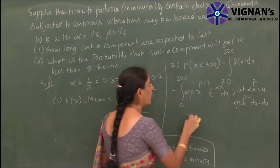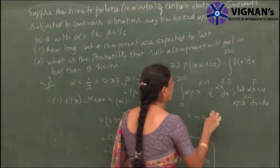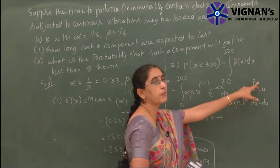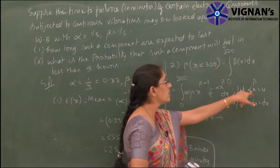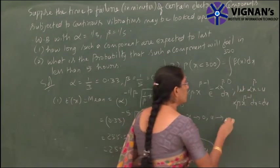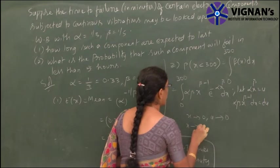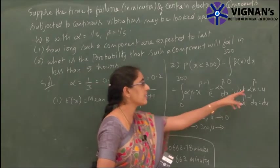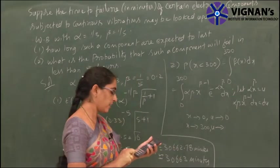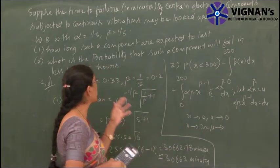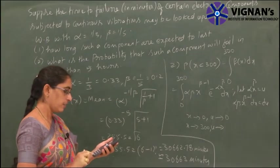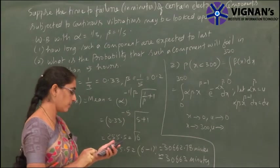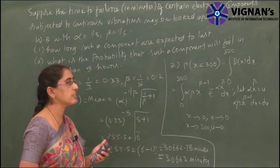Coming to the limits: when x tends to 0, since 0 raised to any power is 0 and 0 times anything is 0, u tends to 0. When x tends to 300, we compute 300^beta = 300^(0.2) and multiply by alpha = 0.33. This gives u tends to 1.03.